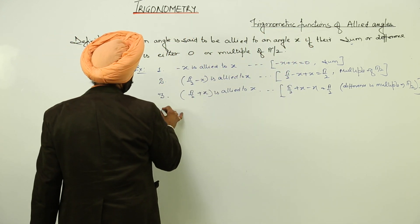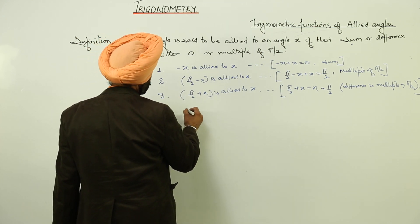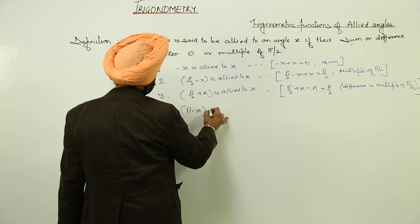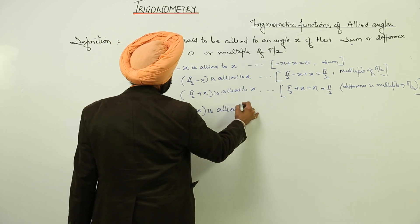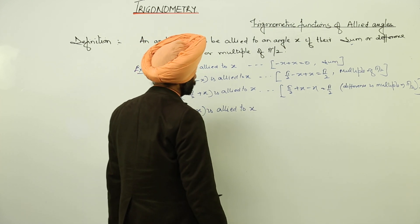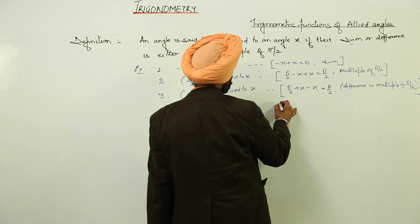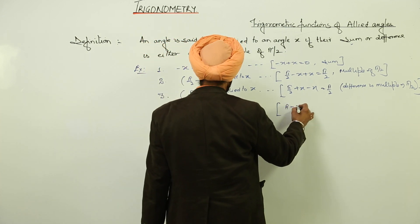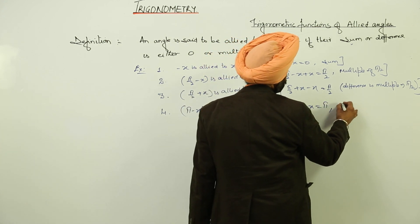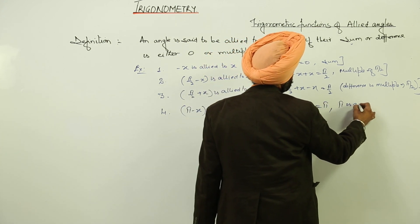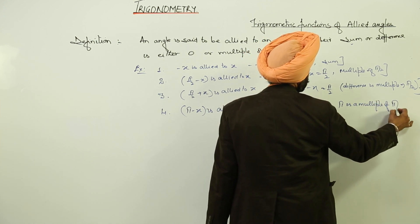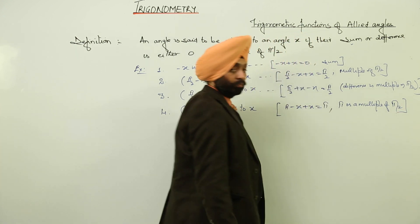Number 4. You can take number of examples. Now, suppose we are having pi minus x is allied to x. Pi minus x is allied to x. So, we can write it pi minus x plus x. This is equal to pi. Now, pi is a multiple of pi by 2.